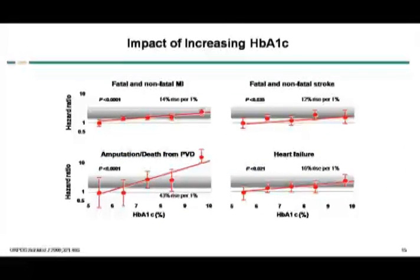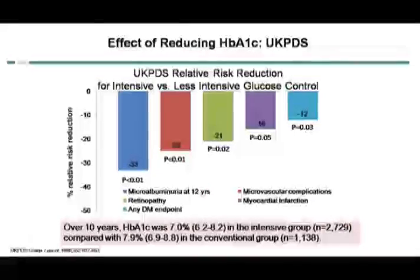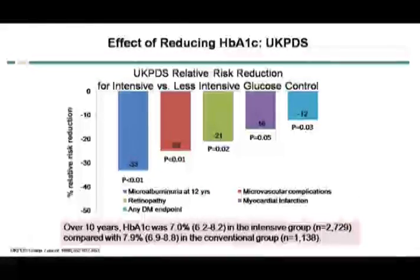Coming to the impact of increasing HbA1c — taking the hyperglycemia part — fatal and non-fatal myocardial infarction is more frequent with higher HbA1c, as is fatal and non-fatal stroke, amputation and death from peripheral vascular disease, and even heart failure. The effect of reducing HbA1c is very nicely shown in the UKPDS study, as all of you know.